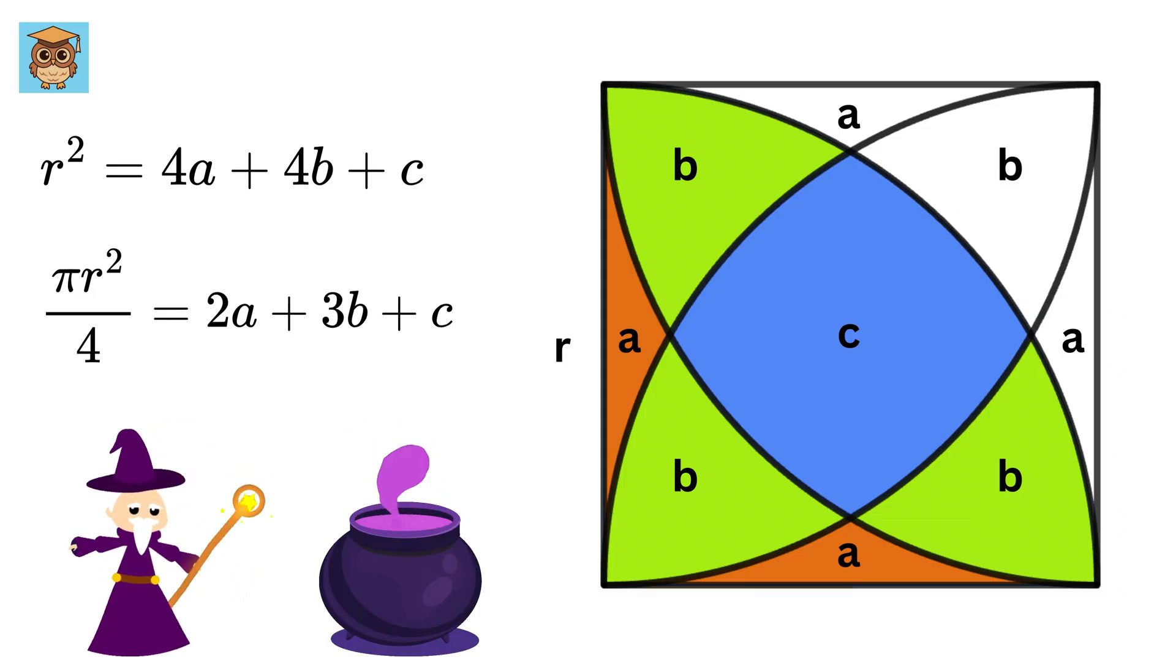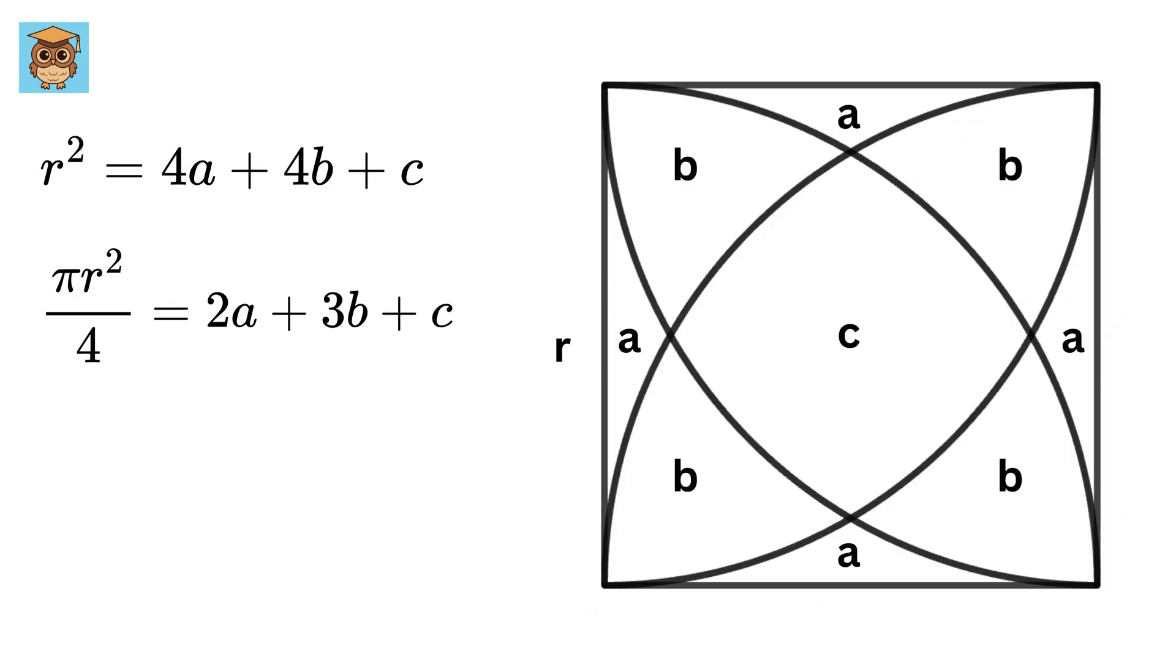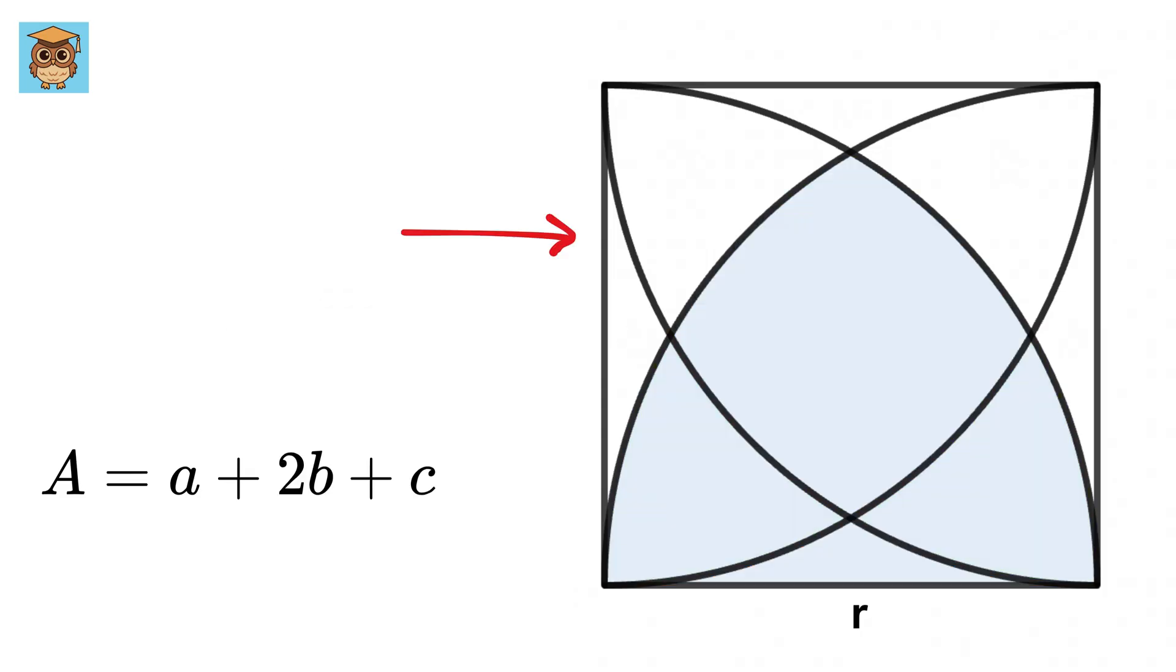So here comes the magic. To find the third equation, we will calculate the area of this shape, which is equal to A plus 2 times B plus C. Now the side length of this square is R, and it is also the radius of all of these quarter circles.